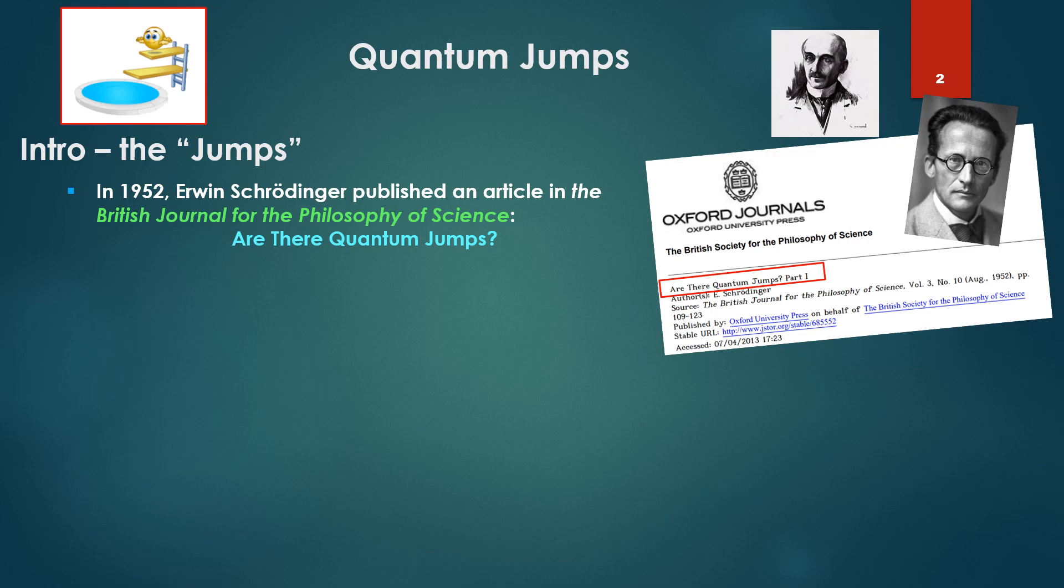In 1952, Erwin Schrödinger published an article in the British Journal for the Philosophy of Science, titled Are There Quantum Jumps? He opened with a warning, an admonition to the physics community.